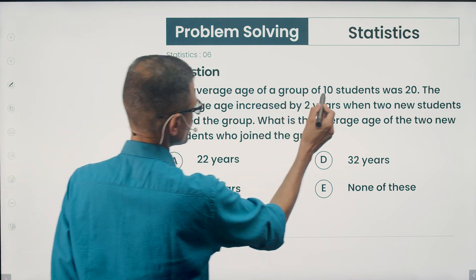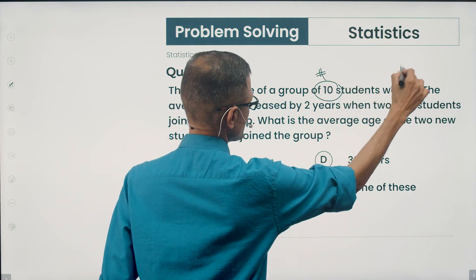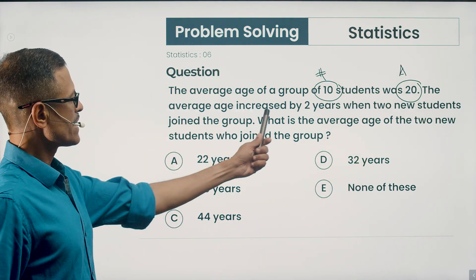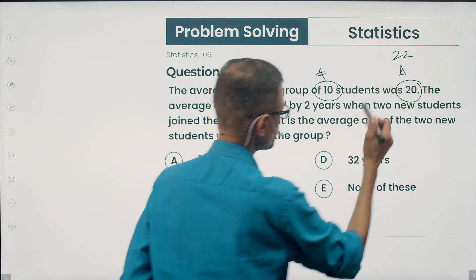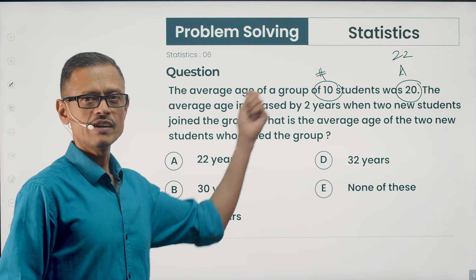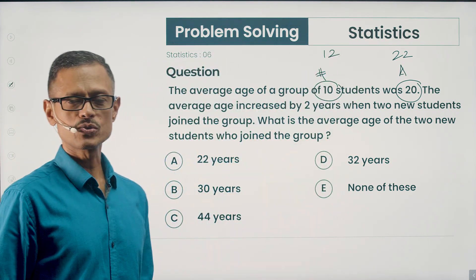The average age of a group of 10 students was 20. So number of students known, their average is known. The average age increased by two years. So this 20 is going to become 22. When? When two new students join the group. We have 10 students, two new join. So total count becomes 12 after the two new students have joined.